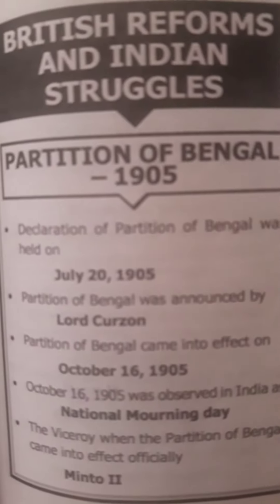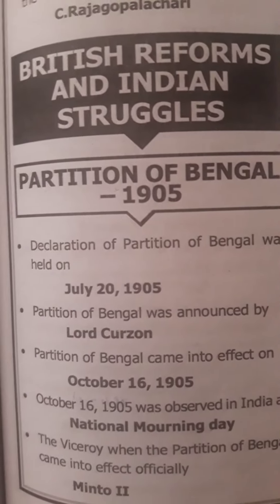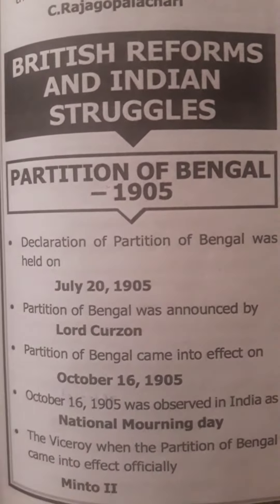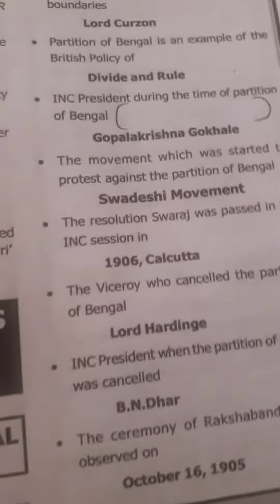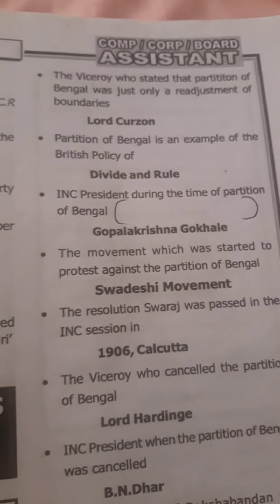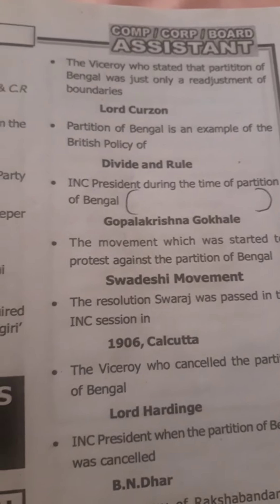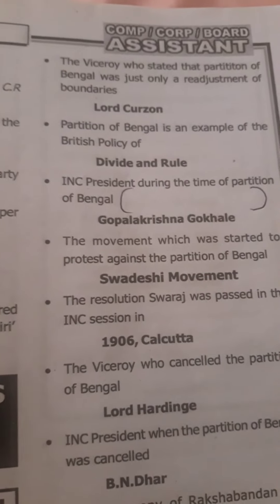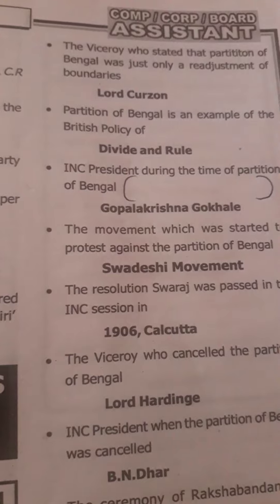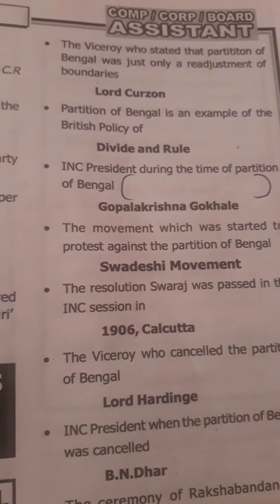October 16, 1905 was observed in India as the National Mourning Day. The viceroy when the Partition of Bengal came into effect officially was Minto 2nd. The viceroy who stated the Partition of Bengal was just a re-adjustment of boundary was Lord Curzon. The Partition of Bengal is an example of the British policy of divide and rule.